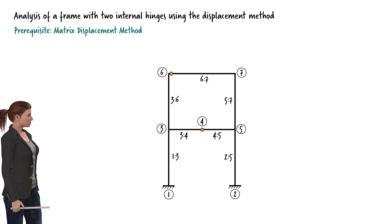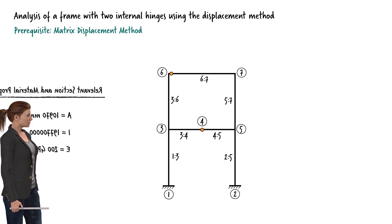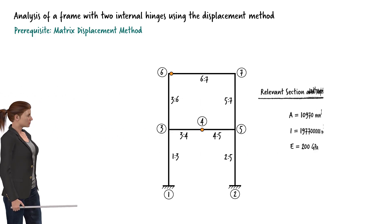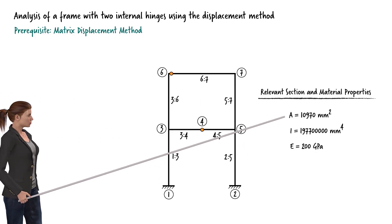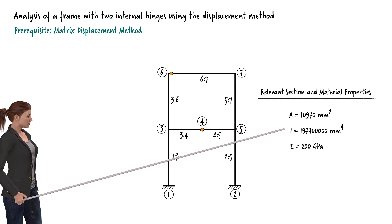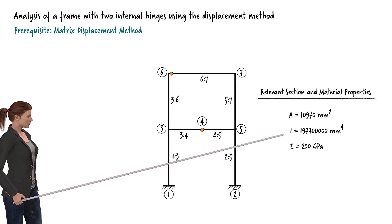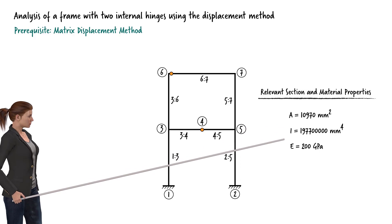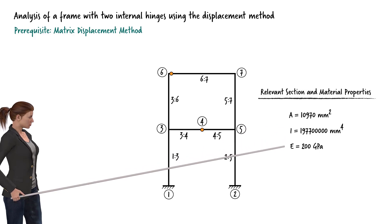We assume the frame members share the same cross-section. This is the cross-sectional area of each member, and this is the moment of inertia of the cross-section about the axis of bending. The modulus of elasticity for structural steel is assumed to be 200 gigapascals.